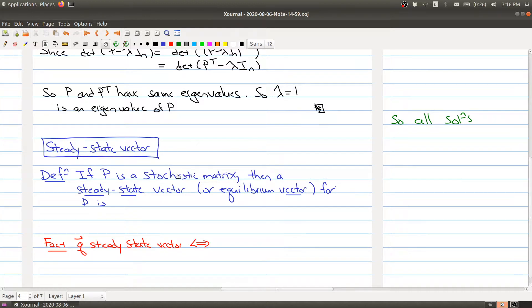But first of all, what we're going to do is define what a steady state vector is. So if we have a stochastic matrix, a steady state vector for the matrix P is a probability vector.